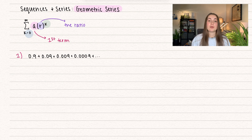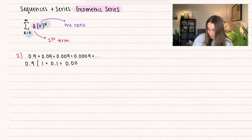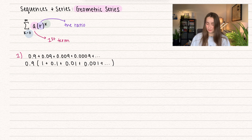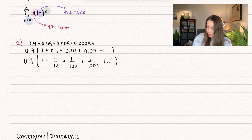We have 0.9 plus 0.09 all the way down. So the first thing I'm going to do is pull out that first term. So we have 0.9 and I'm left with one plus 0.1 plus 0.001 plus all the way down. Let's go ahead and represent these with fractions — that might be a little nicer. So 0.9 times 1 plus 1 tenth plus 1 over 100, 1 over 1,000, and then so on. Notice in the denominator, all of these are powers of 10.